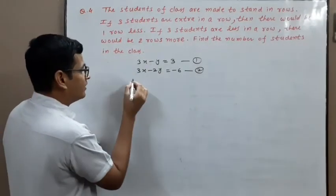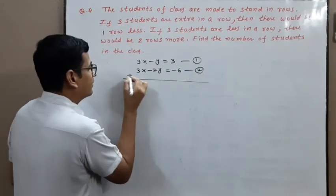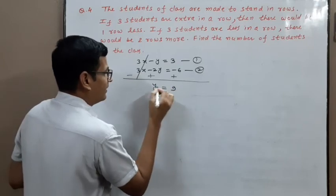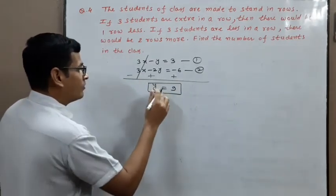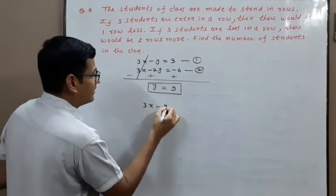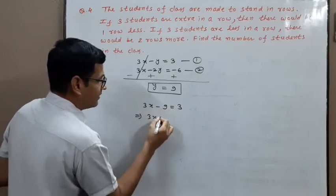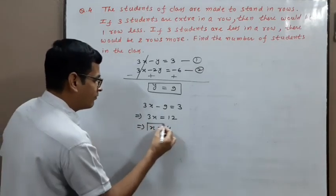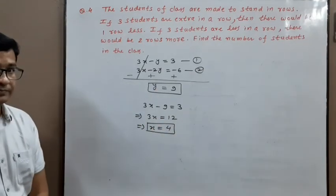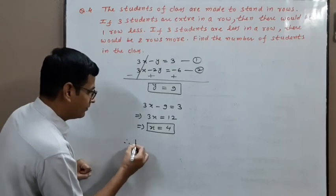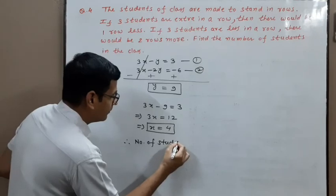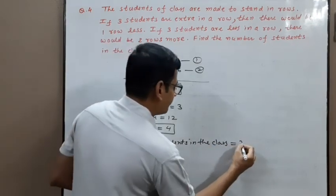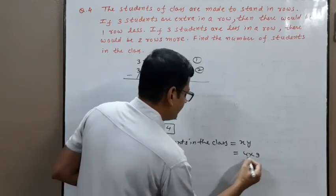Multiplying equation 1 by 2 and subtracting equation 2: 2Y minus Y equals 9, so Y equals 9. Substituting back into equation 1: 3X minus 9 equals 3, so 3X equals 12, therefore X equals 4. Number of rows equals 4 and number of students per row equals 9. Therefore total number of students in the class equals X times Y equals 4 times 9 equals 36.